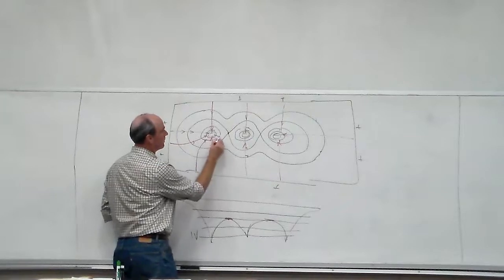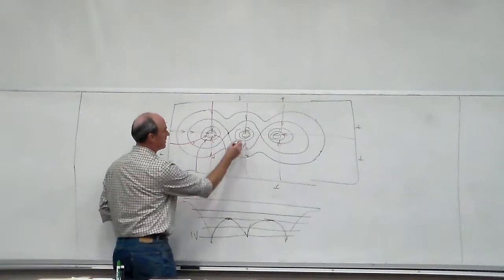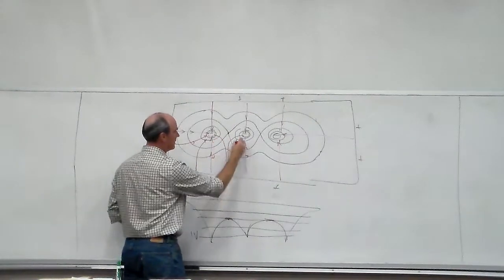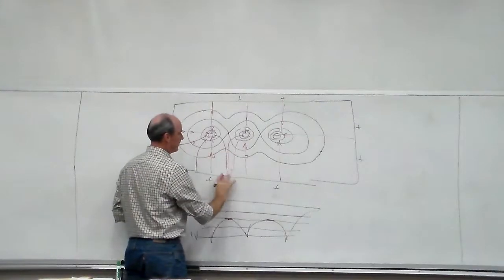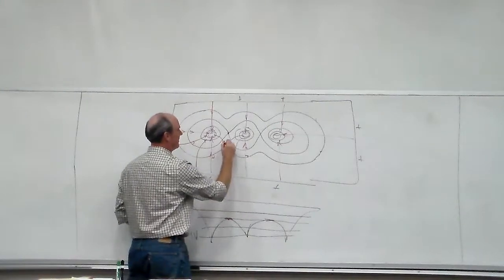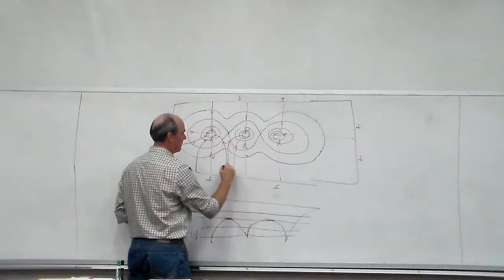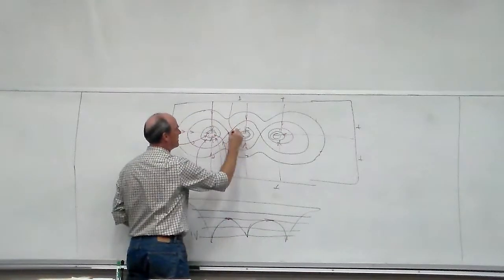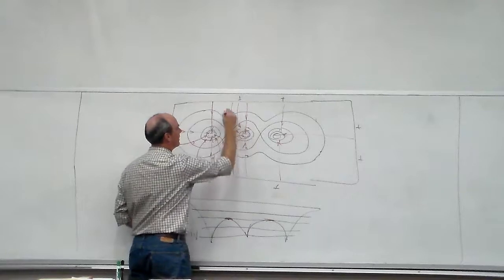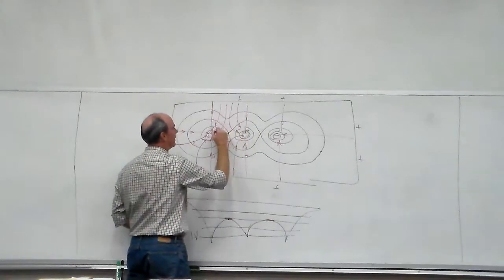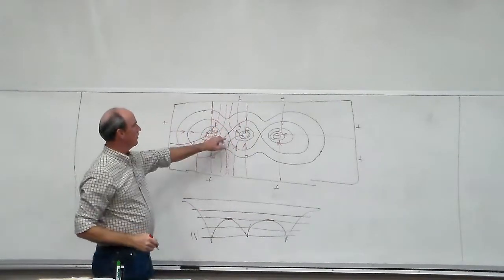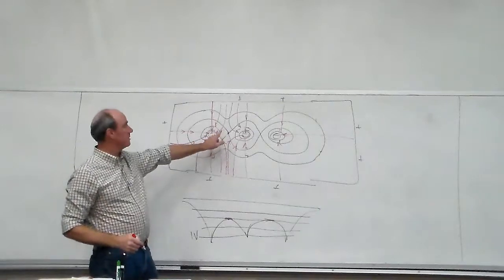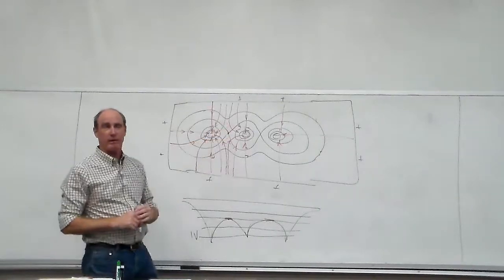So, the electric field lines, if you did this carefully, would go like this and like this. But they really won't go near this part here because it's a flat feature.